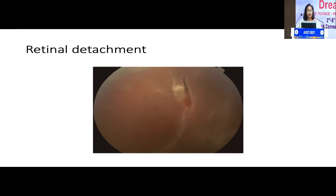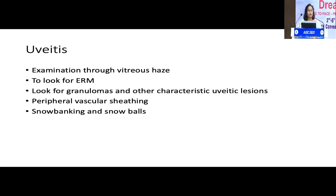In retinal detachment, it is very important to look for breaks, active breaks, and the grade of PVR changes — to determine whether to go for buckling or vitrectomy. These modalities of treatment are confirmed on a meticulous indirect ophthalmoscopic examination. Especially in uveitis with vitreous haze, it is very important to examine for ERMs, granulomas, characteristic uveitis lesions, peripheral vascular sheathing, and to rule out snow banking and snowballs.